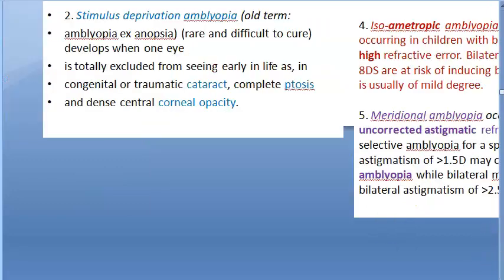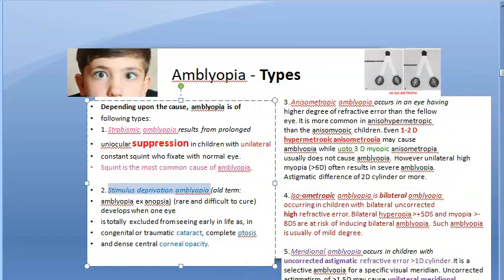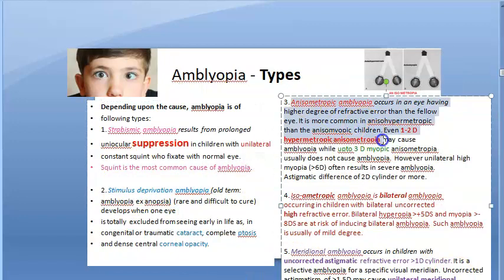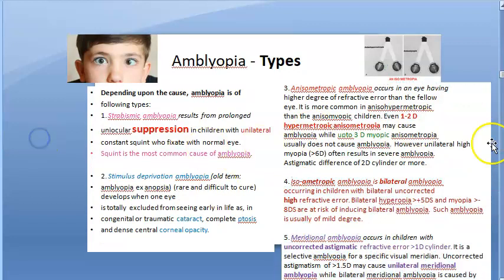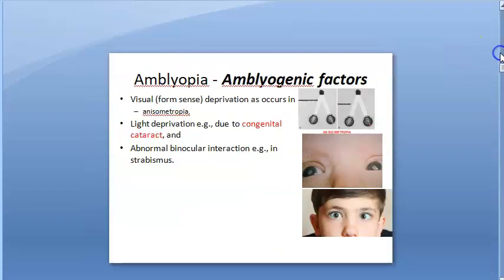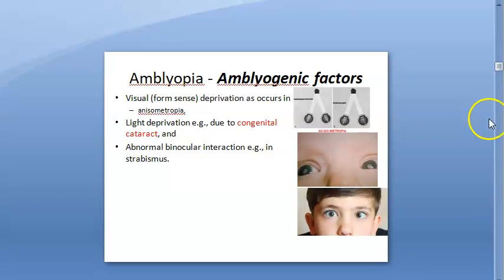So to summarize the types: strabismic amblyopia, stimulus deprivation amblyopia, anisometropic amblyopia, isoametropic amblyopia, and meridional amblyopia — all based on the amblyogenic factors.